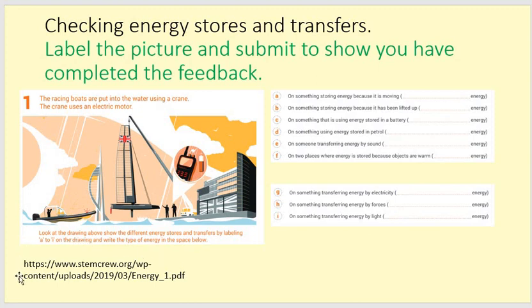This question came from the STEM crew sheet — I've given you the link to that unit so that if you feel you need to, or you're interested in revising these energy stores and transfers, please use this link. This is actually real-life context. This is from INEOS, who are the people that organise the British entry into the America's Cup, and they use lots of forces and science to make their boats really good to try and win that cup back from the United States. So this is not just a 'what if' type of question — this is a real-life use and application of science, giving people jobs, and something you could do when you're older if you're interested.